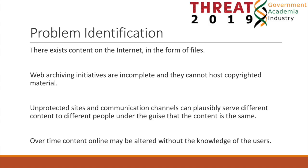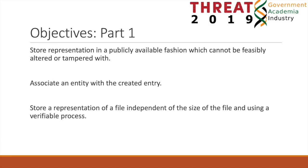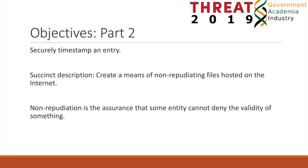My objective is to store an immutable representation of a file which is smaller than the original file, recording when it was done, and associate ownership of said representation with the party requesting the non-repudiation service, along with a link to the web resource close to that point in time. This record is then stored in a way that ensures tampering does not occur. For clarity, non-repudiation is assurance that some entity cannot deny the validity of something.